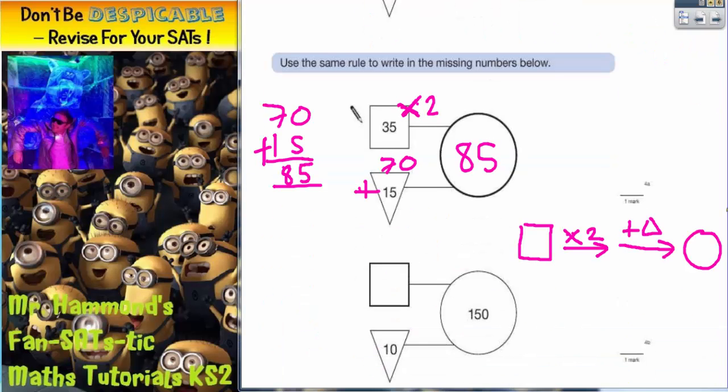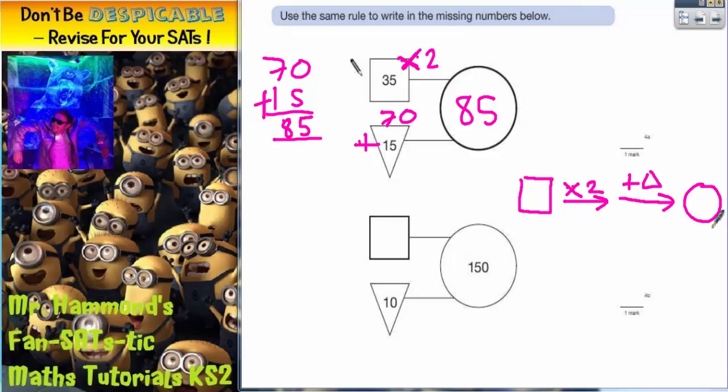However, on the second one, it's not going to be so straightforward because this time we don't know the square. And our rule tells us to start with the number in the square. But if we don't know the square, how can we start with the number in the square? However, we do know the number in the circle, which is the one that's at the end of our rule. So what we're going to have to do is start at the end of the rule and work backwards.